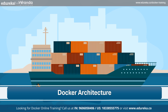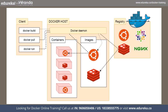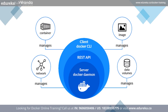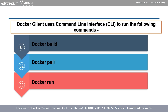Now let's see the Docker architecture. Docker is based on the client-server architecture with three major components: Docker client, Docker host, and Docker registry. The Docker client communicates with the Docker daemon — the server — by using commands and REST APIs. When the client runs a Docker command on the terminal, it sends these commands to the Docker daemon. Docker client uses the command line interface CLI to run commands such as Docker build, Docker pull, and Docker run.